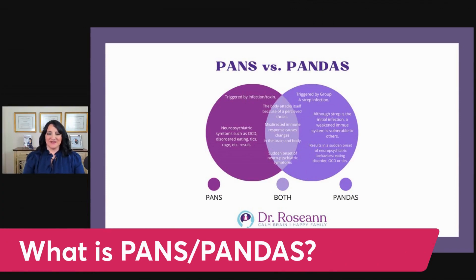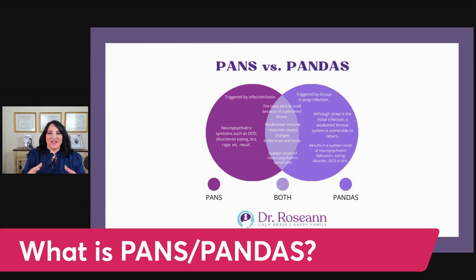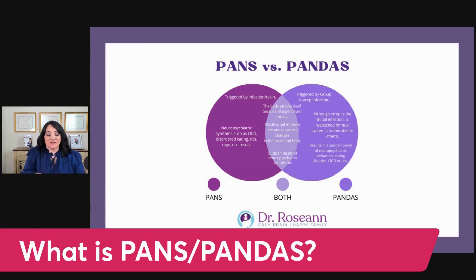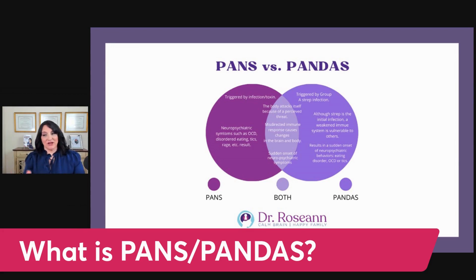PANS and PANDAS are two separate clinical disorders. At the heart of both is a misdirected immune response — an infection or a toxin comes in, the body starts trying to get rid of it, and it attacks itself. That causes a tremendous amount of inflammation in the brain and body, and triggers neuropsychiatric and neurocognitive symptoms.